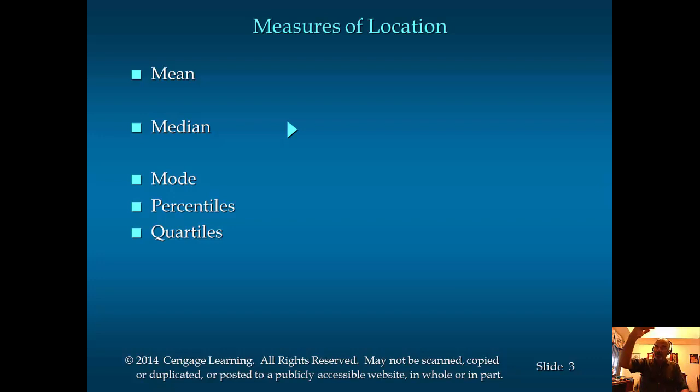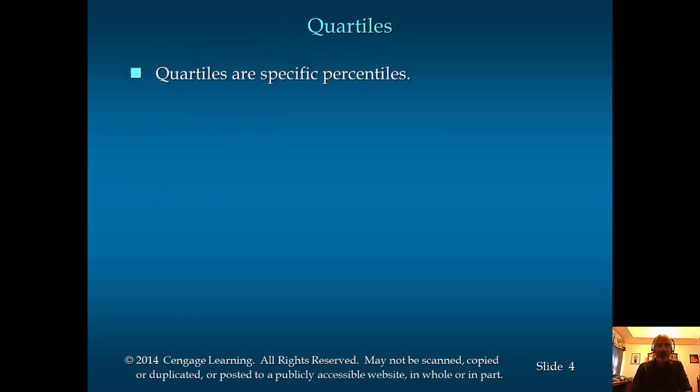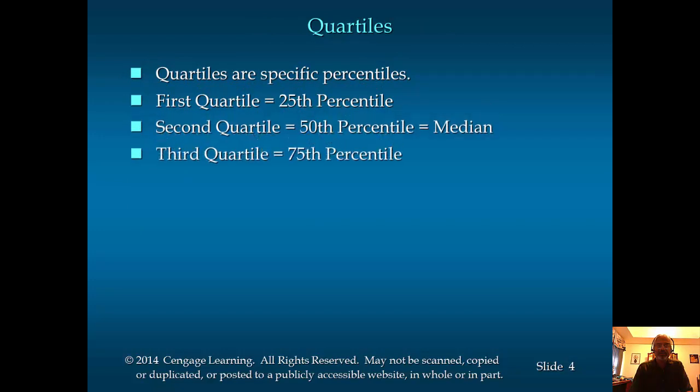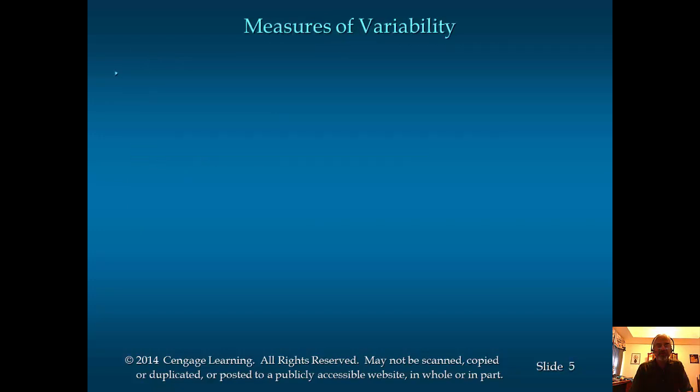Quartile refers to particular percentiles. 25th percentile is the first quartile. 50th percentile is the second quartile, and that is the same as median. 75th percentile is the third quartile. So quartiles are, if you take the data set from smallest to largest and divide them into four parts, the values of the dividing points are the quartiles. First quartile is 25th percentile, second is 50th percentile (median), third is 75th percentile.